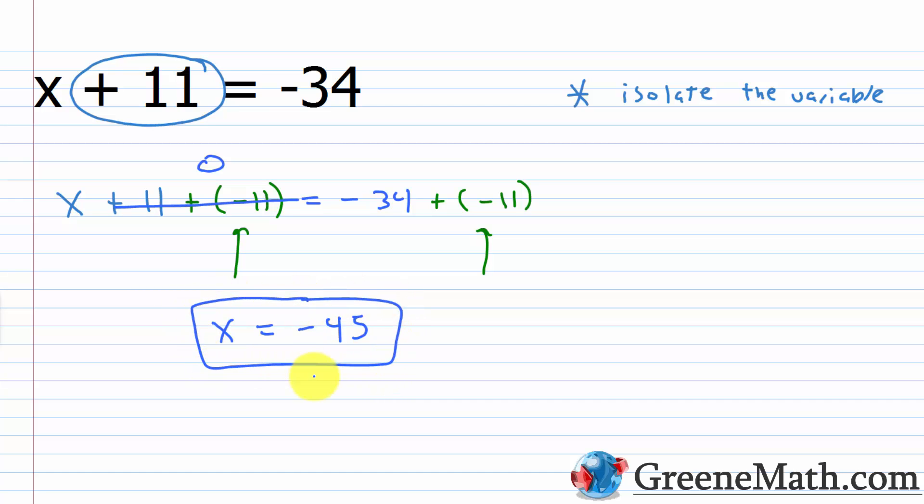We can check this. Think about plugging in a negative 45 for x there. If I had negative 45 plus 11, does that equal negative 34? Yes, it does. Negative 45 plus 11 is negative 34. So you get negative 34 equals negative 34. So this is true.